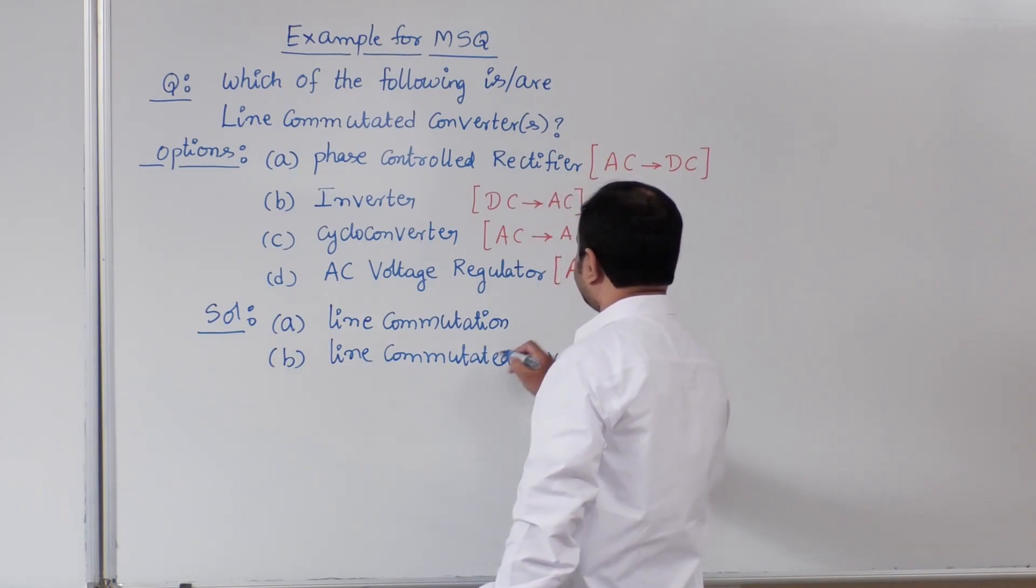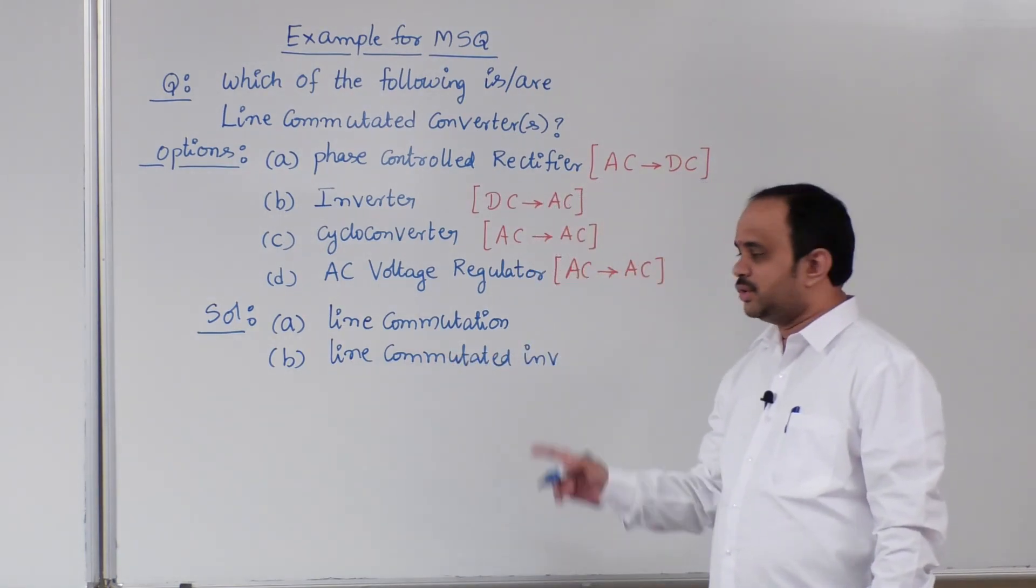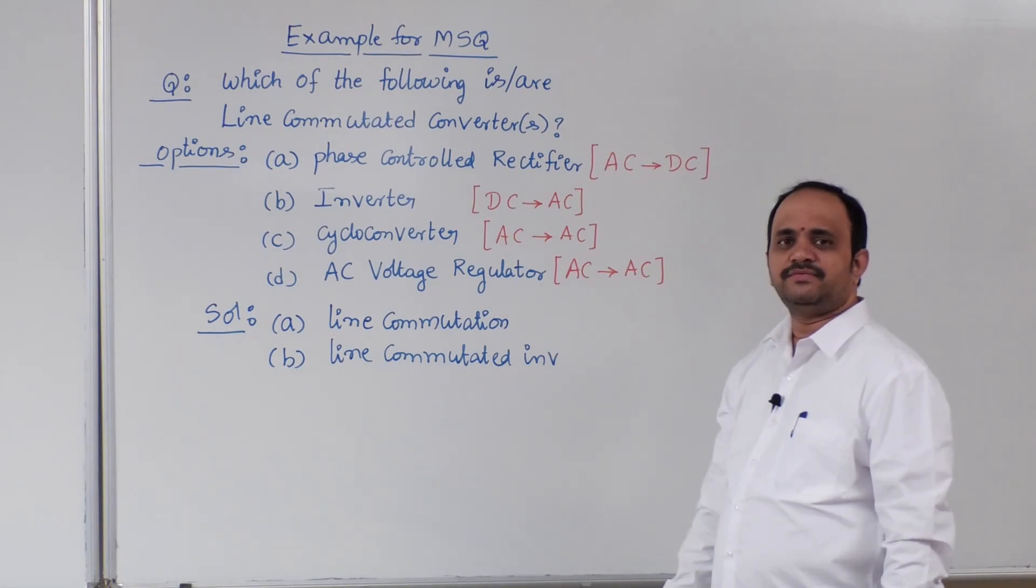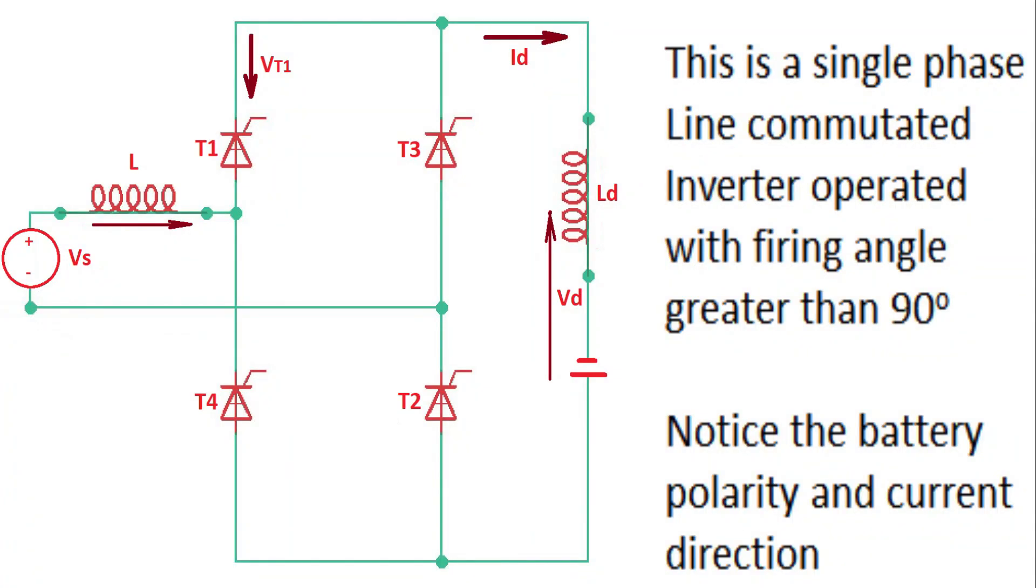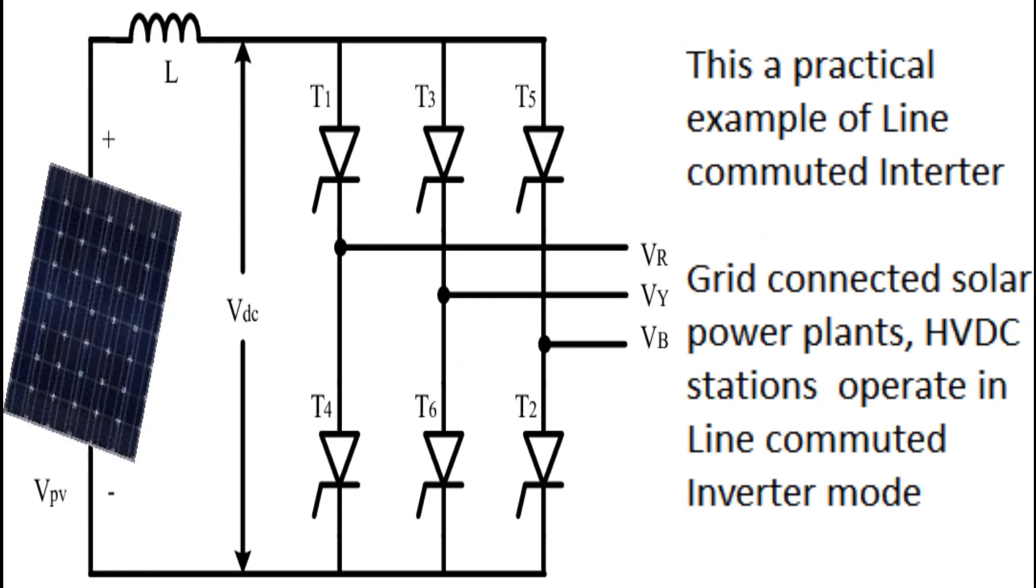Line commutated inverter. This is a sub category of fully controlled rectifier circuit with alpha greater than 90 degree.